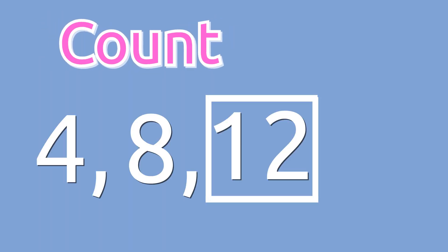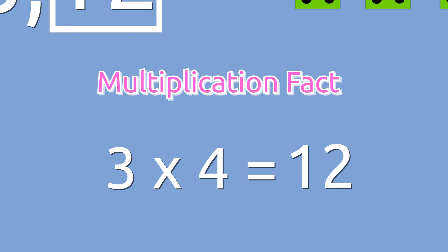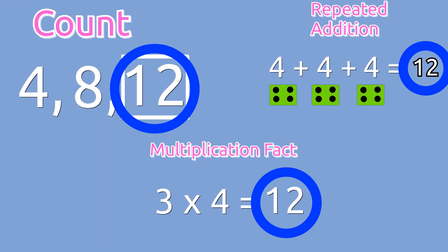To find the total, we can count by 4 three times. We can add 4 plus 4 plus 4, or we can recall the multiplication fact we memorized. All of these methods will take us to the total.